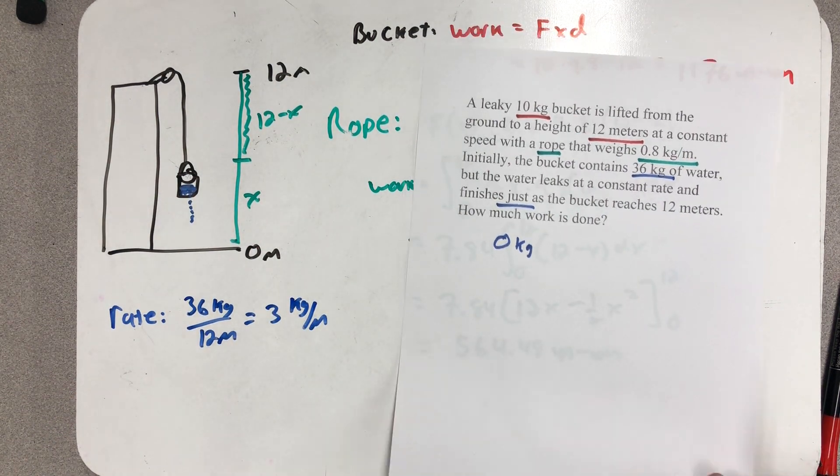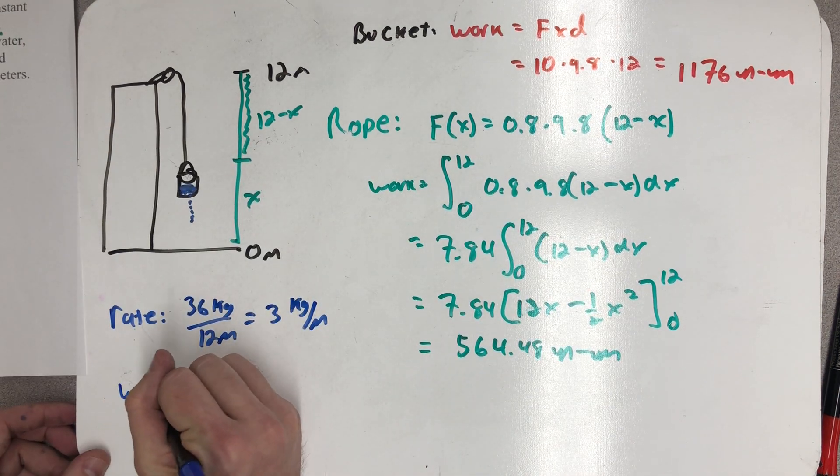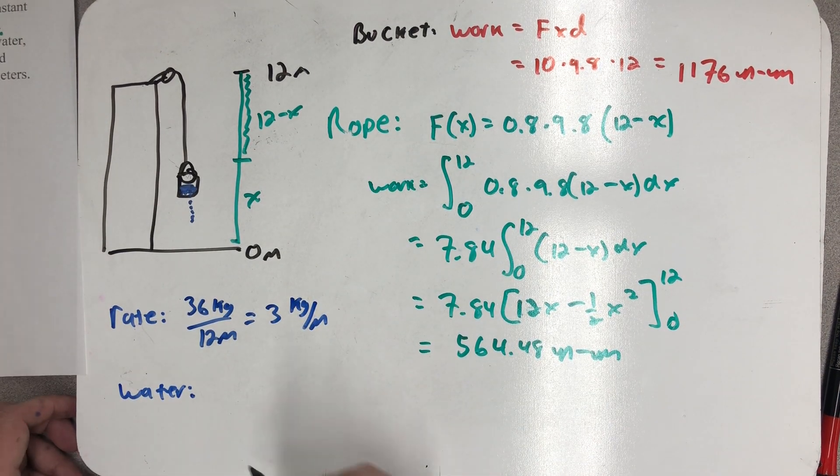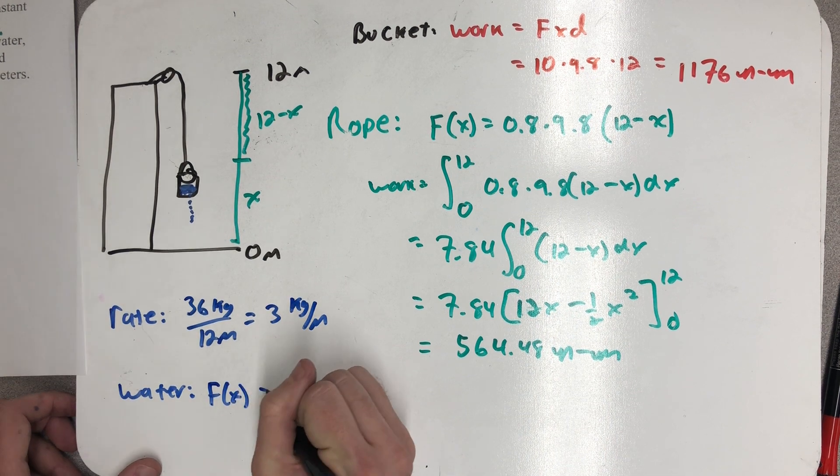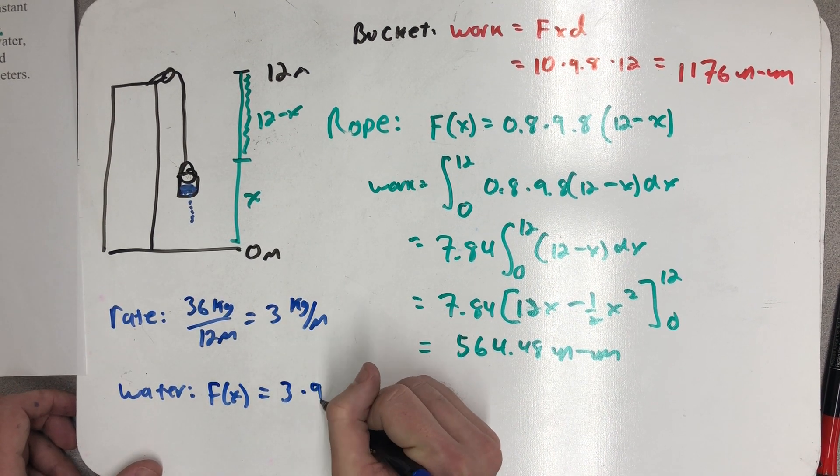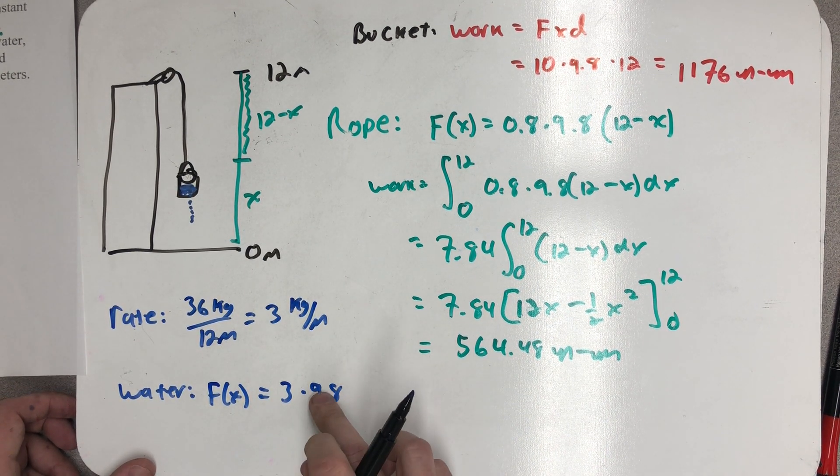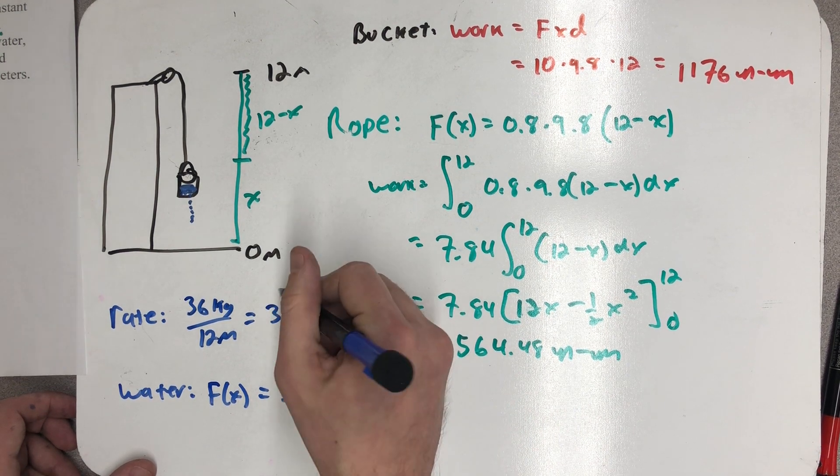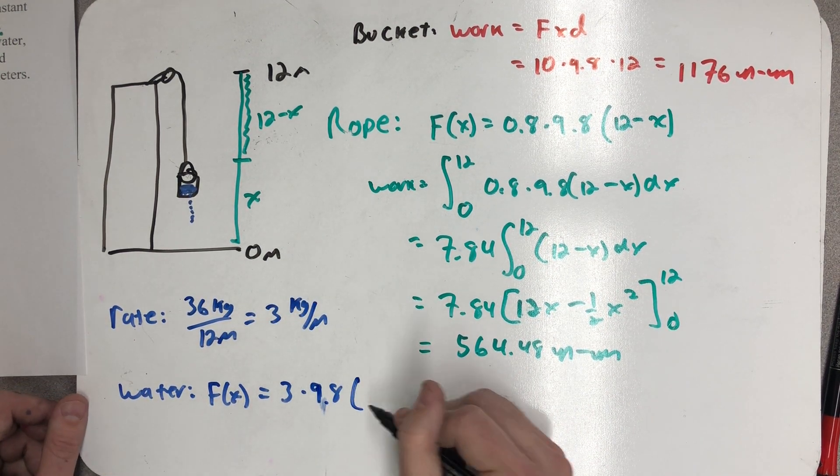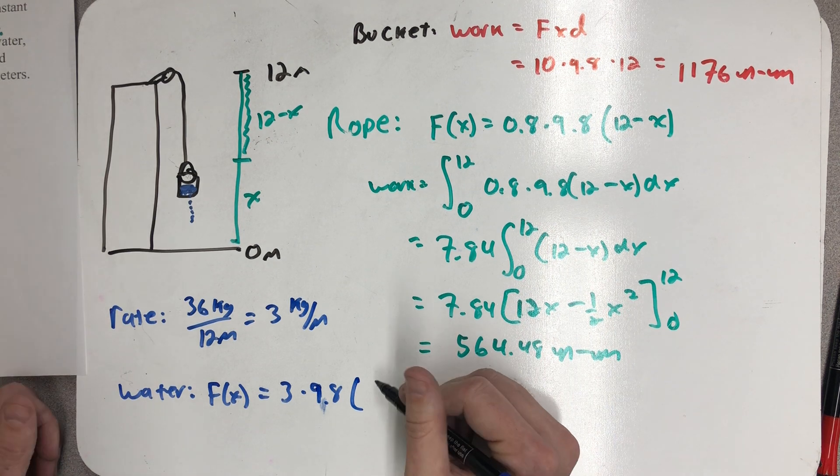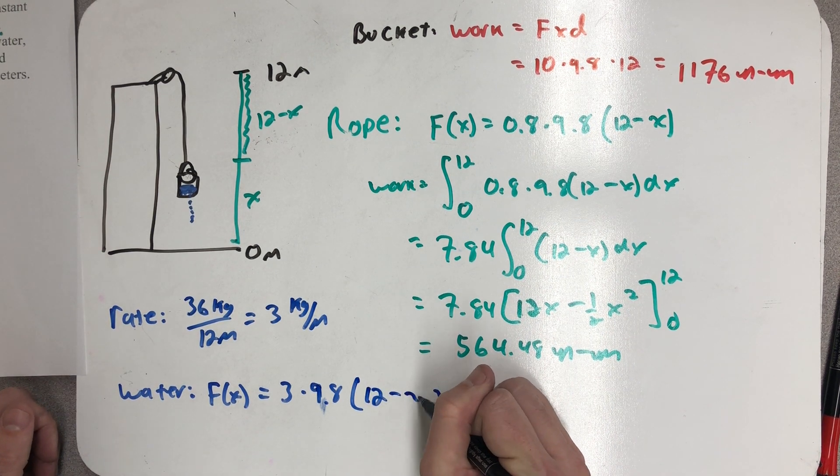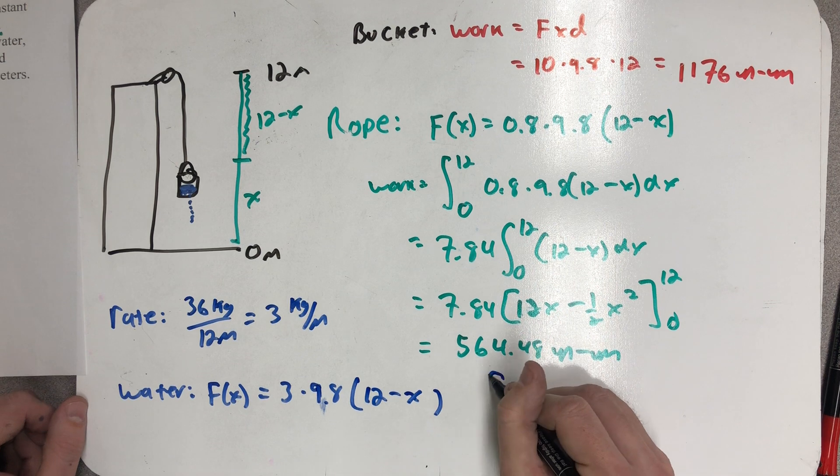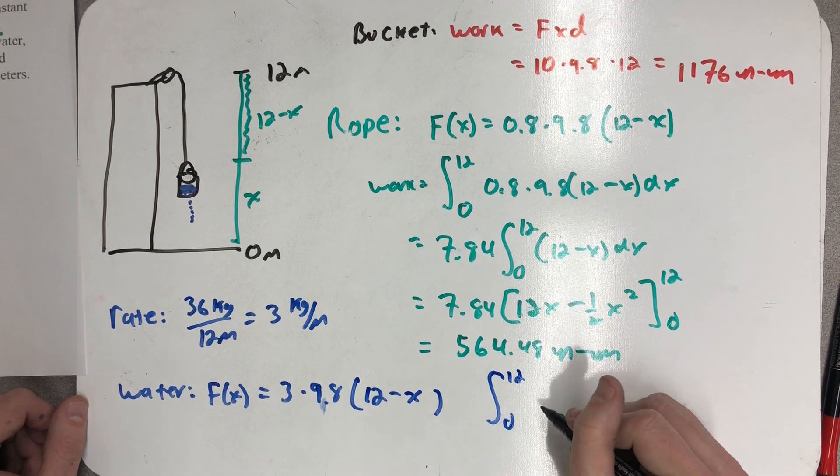All right, so for the water, if I wanted to create a force function, I would have that three times 9.8 meters per second squared to turn it into a rate that is newtons per meter, times that 12 minus x. So now I can integrate that from 0 to 12.